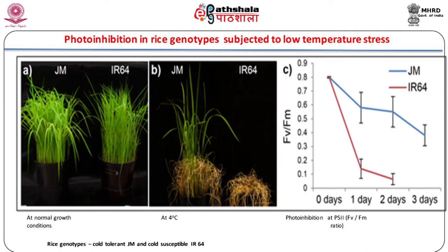Cold stress acclimation in Jumli Marshi (JM) and IR64 genotypes of rice is shown here. JM and IR64 seedlings were grown for 3 weeks under regular growth conditions and then moved to 4 degree centigrade cold conditions. After 3 days in cold conditions, plants were moved back to regular growth conditions and allowed to recover for 2 weeks. Figure A shows plants just before cold exposure, figure B shows cold treated plants after recovery for 2 weeks, and figure C shows the chlorophyll Fv/Fm ratios in JM and IR64 during cold stress exposure.